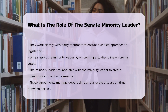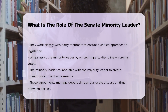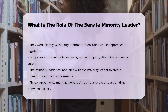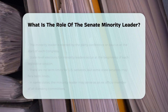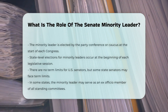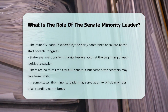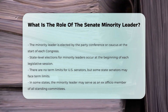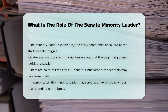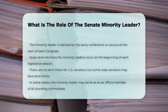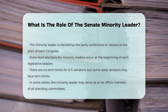Election and Tenure: The Senate minority leader is elected by the party conference or caucus at the beginning of each Congress. At the state level, this election occurs at the beginning of each legislative session. There are no term limits for U.S. Senators, but state senators may be subject to term limits depending on their state's laws.